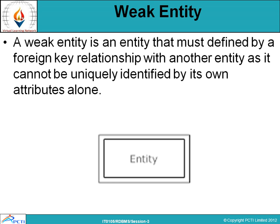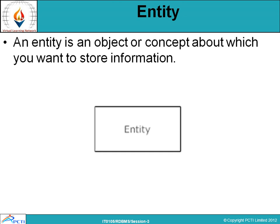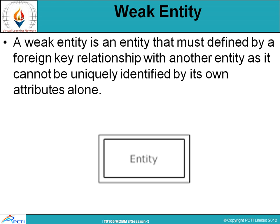The previous simple rectangular box entity is also called a strong entity. The next category is weak entity. A weak entity is an entity that must be defined by a foreign key relationship with another entity, as it cannot be uniquely identified by its own attributes alone. The weak entity is defined by the foreign key and cannot be uniquely identified on its own. It is represented by a double rectangle box.